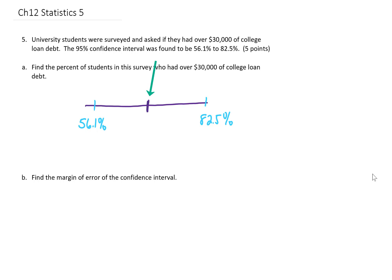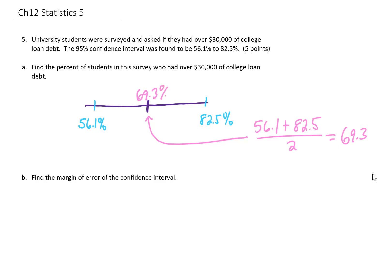what we need to do is find the value right in the middle of this interval. To do that, we just find the average value of 56.1 and 82.5. So we add those two numbers together and divide by 2. We get 69.3. So this survey found that 69.3% of those surveyed had college debt of greater than $30,000.